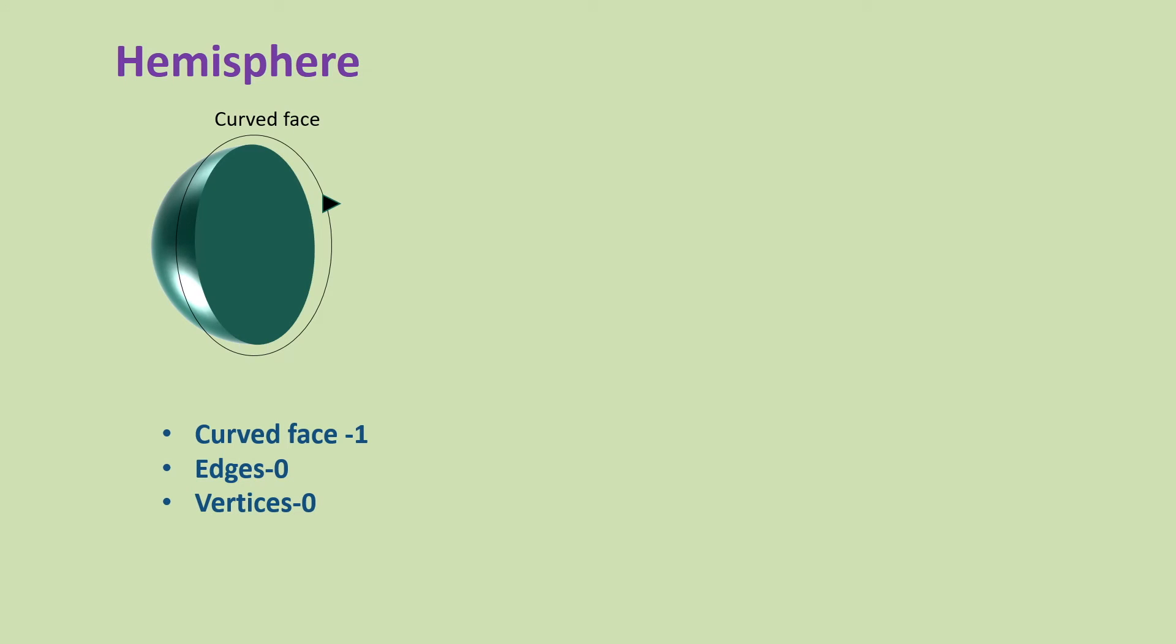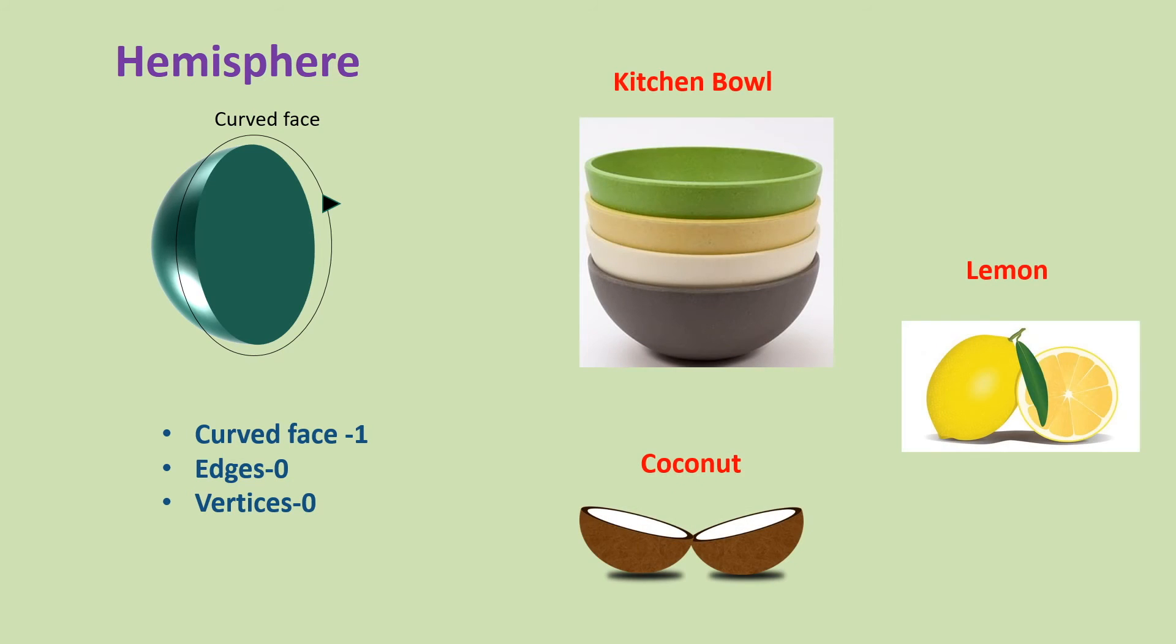Next 3D shape is hemisphere. This shape has only one curved face. It doesn't have edges or vertices. Kitchen bowl, lemon, and coconut are some of the examples of hemisphere shape.